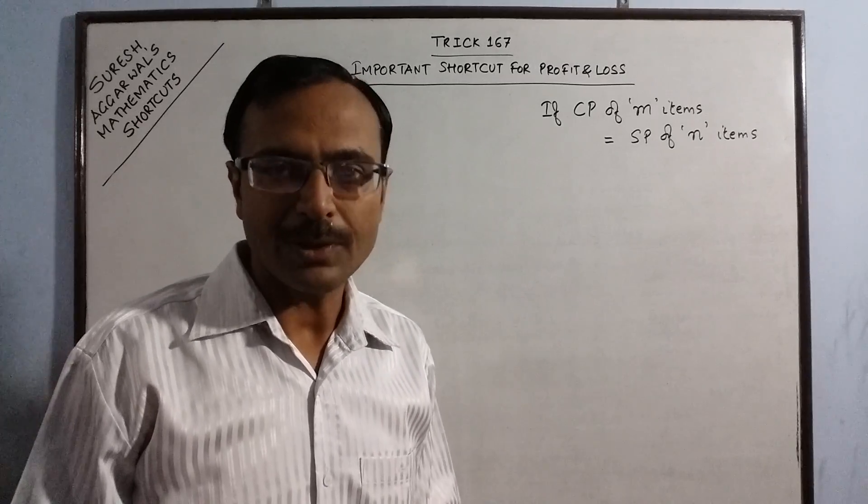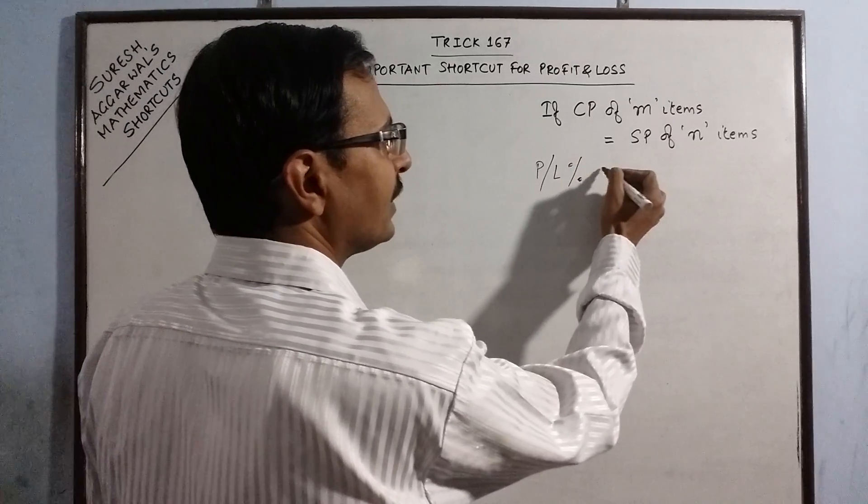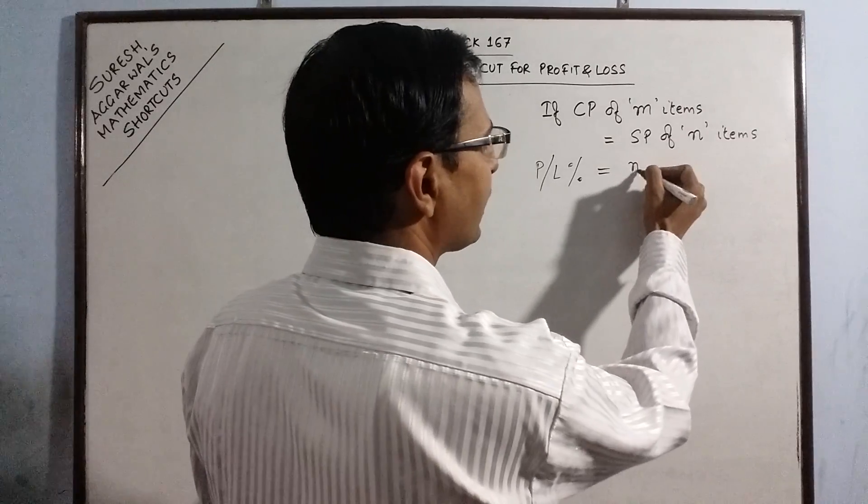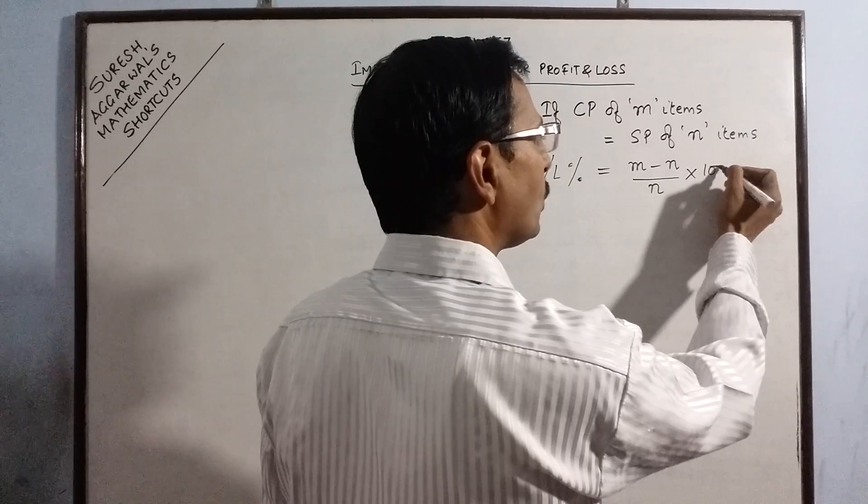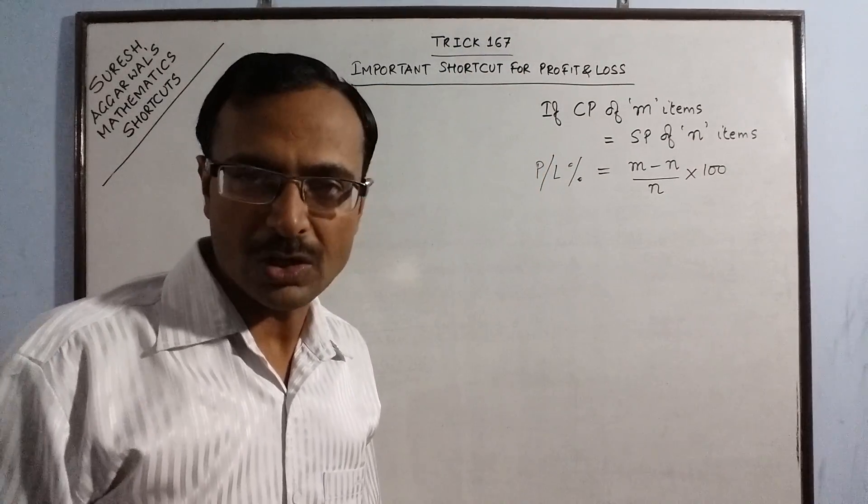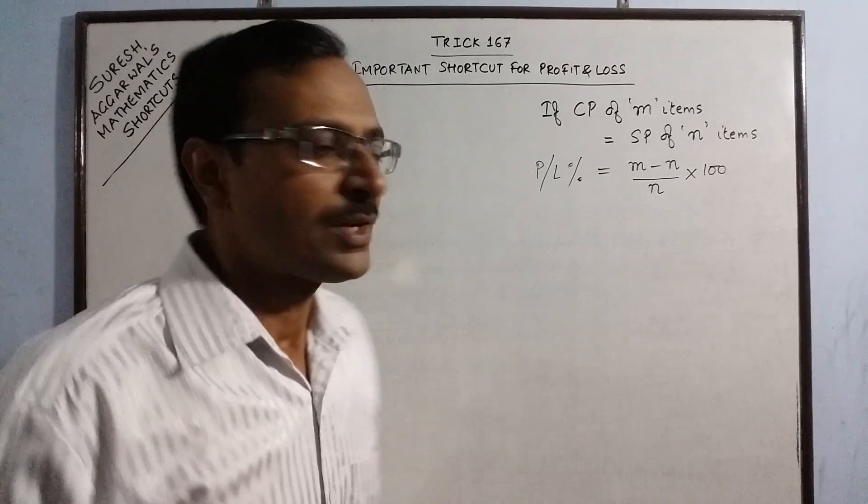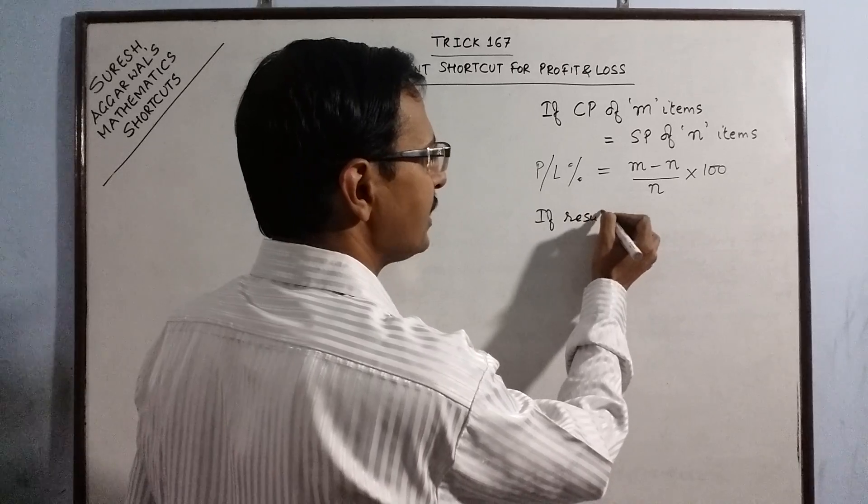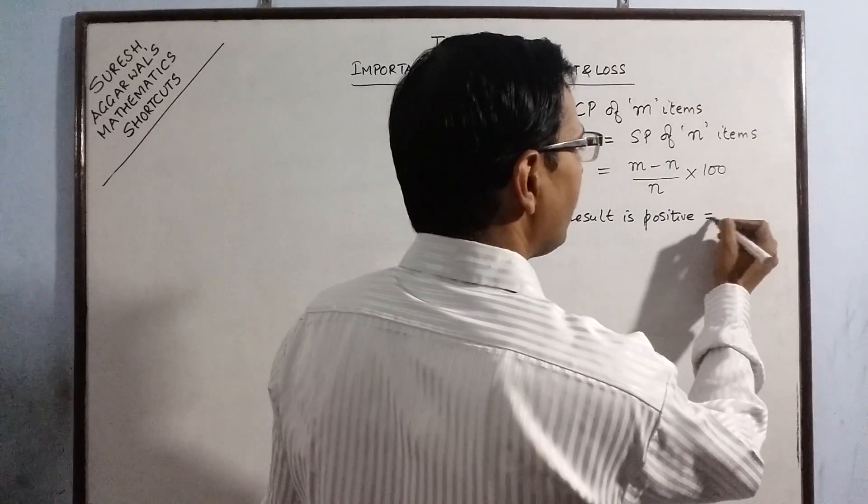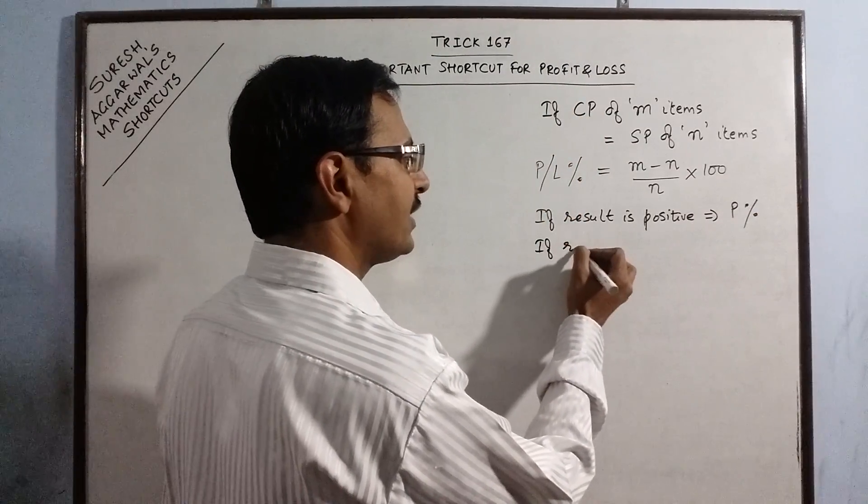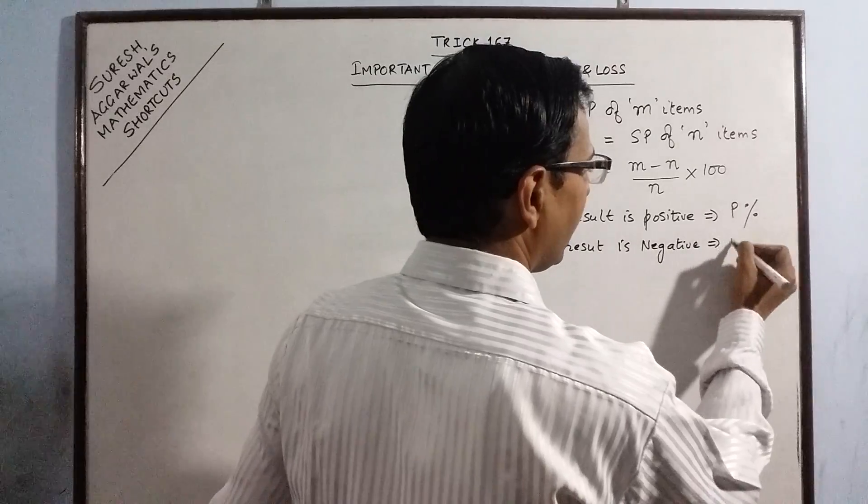then we need to find what is the profit percent or loss percent. So, if you want to calculate the profit or loss percent, then through shortcut, we can just subtract the two given numbers m and n and divide it by n multiplied by 100 to get the required profit percent or loss percent. Now, the question is how will we know whether the obtained answer is profit percent or loss percent. So, very simple, if the result is positive, means we obtain a positive value by subtracting m and n, then it implies it is profit percent and vice versa, if the result of this calculation is negative, then we obtain loss percent.